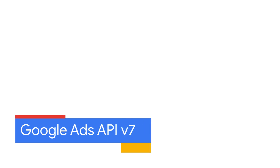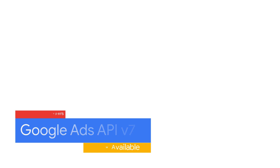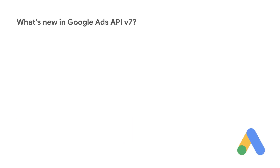Google Ads API version 7 is now available. Whether you are starting out with Google Ads API for the first time or migrating your existing AdWords API integration, we hope version 7 has something for you. So what's in version 7?